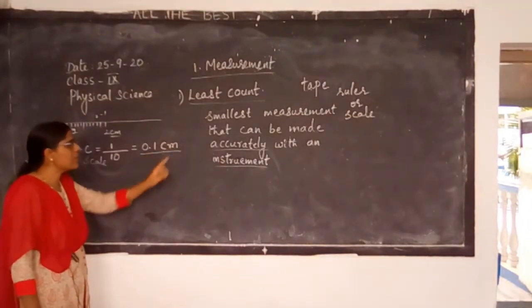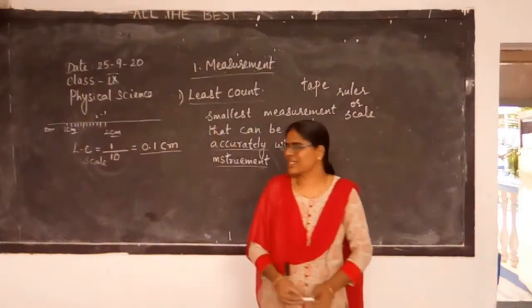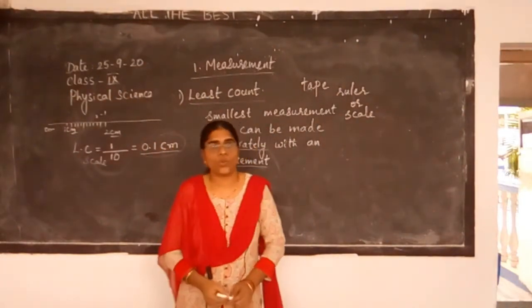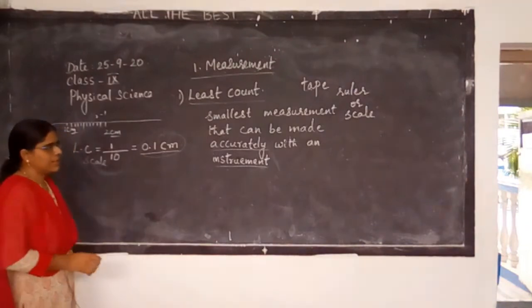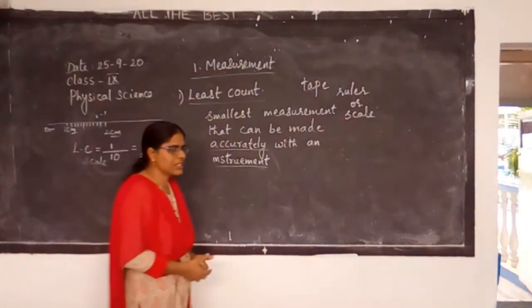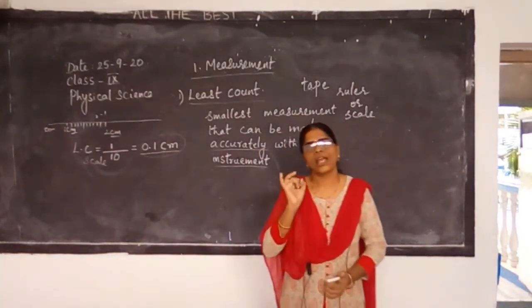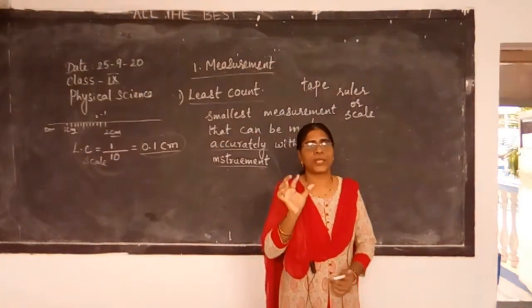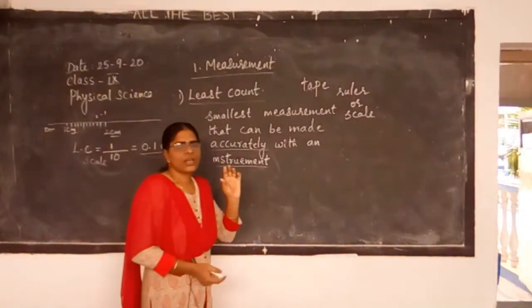Now, least count — you can denote it as LC. Between 2 and 1, the difference is 2 minus 1 equals 1. Divided by the number of divisions, which is 10. So 1 divided by 10 gives 0.1 cm. The smallest measurement that can be made using your scale is 0.1 cm.